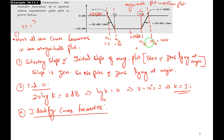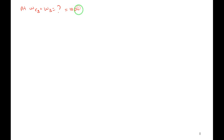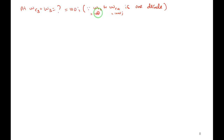Let me redraw the magnitude plot with slopes in dB per decade. There is a 32 dB reference line. Starting from low frequency, the initial slope is +40 dB per decade. At ω = 0.5, slope changes. At ω = 1.0, slope changes again. At ω = 5, slope changes again. The corner frequencies are ωc1 = 0.5, ωc2 = 1, and ωc3 = 5 rad/s.